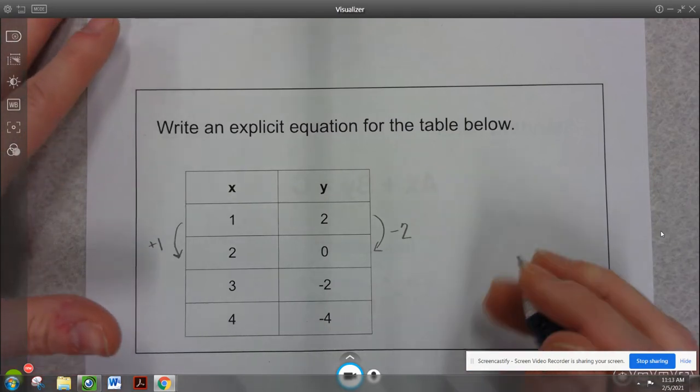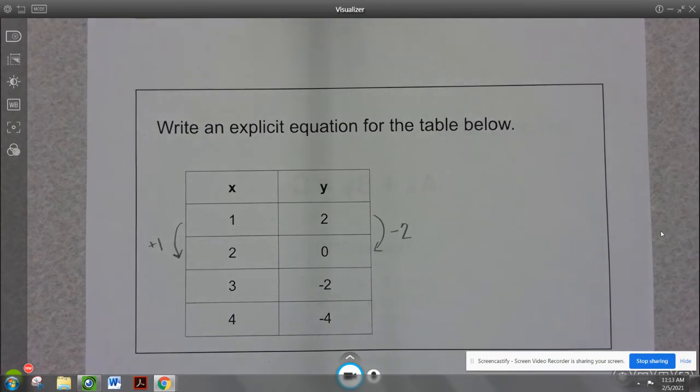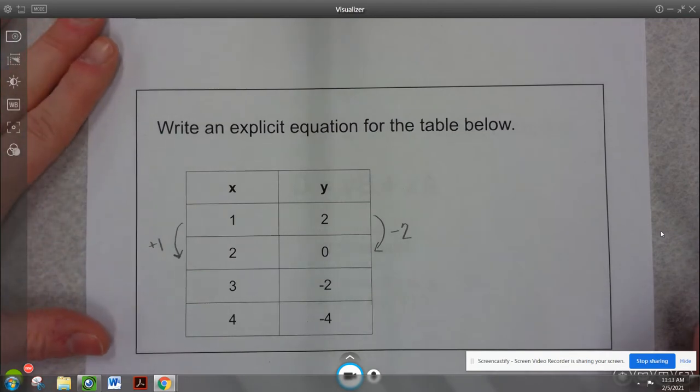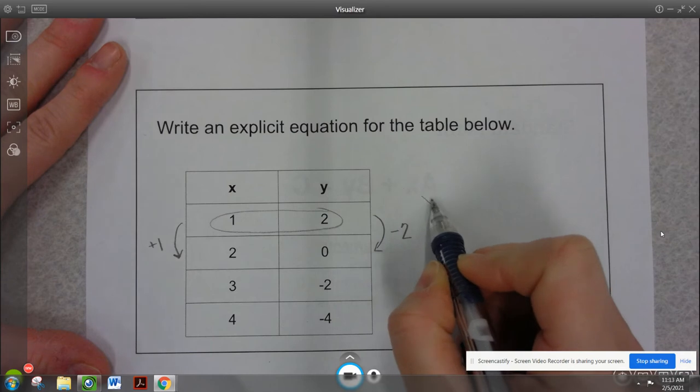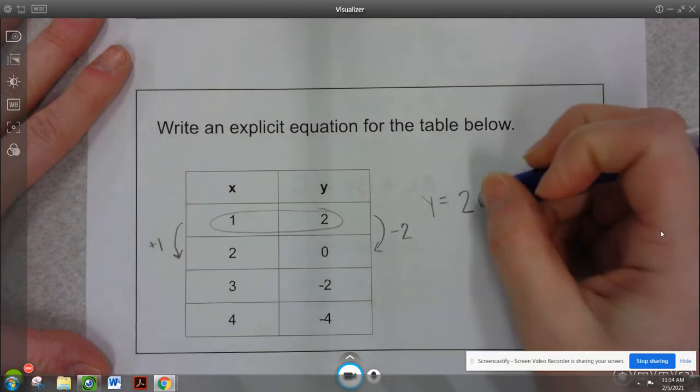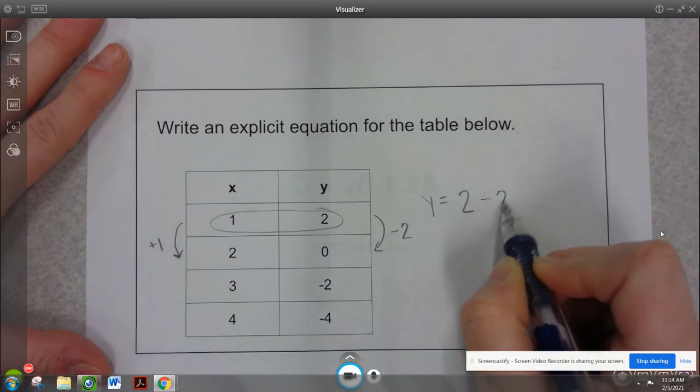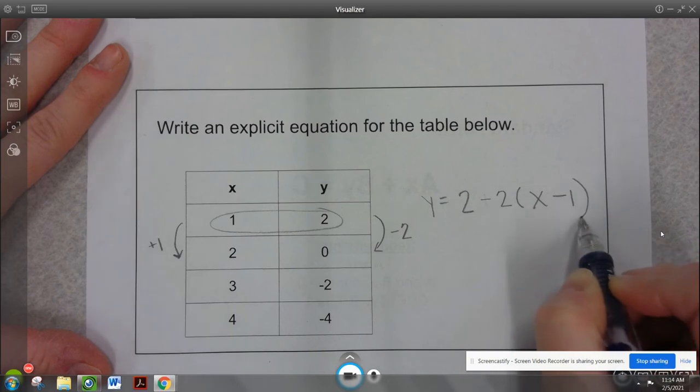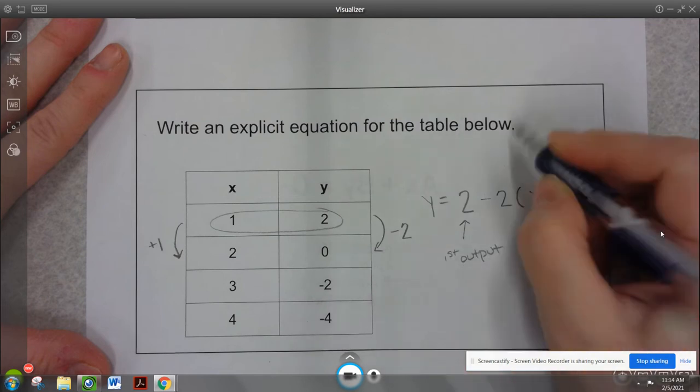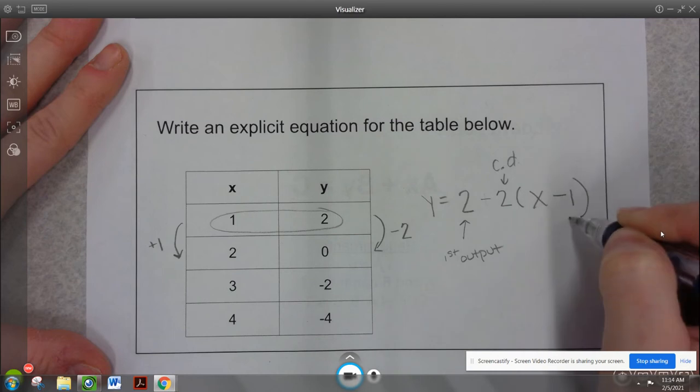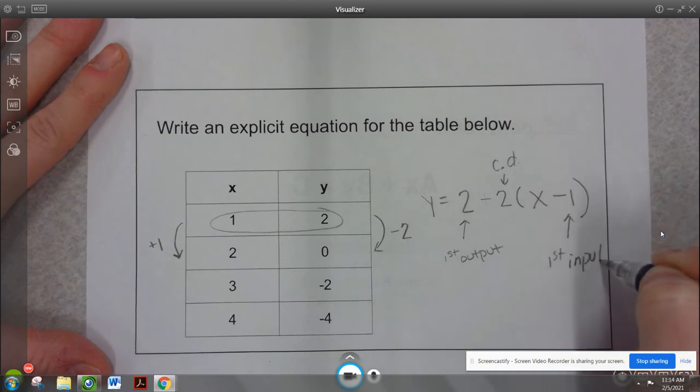So you could choose to write the explicit form. You could also choose to write point-slope form if you'd prefer. I'm going to do explicit form just for some extra practice with our arithmetic sequence writing that we did in the past. So I'm going to use this very first point here. So I'm going to say y equals 2 minus 2 times x minus 1. So this is my first output, this is my common difference, and this is my first input, just as a reminder.